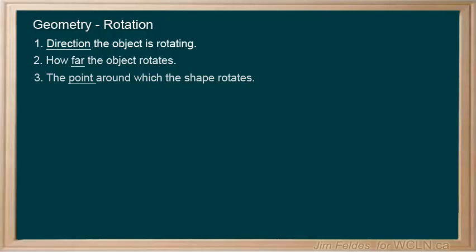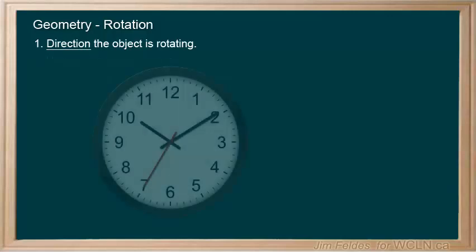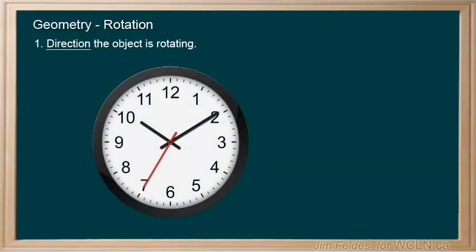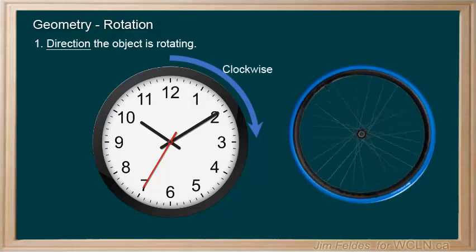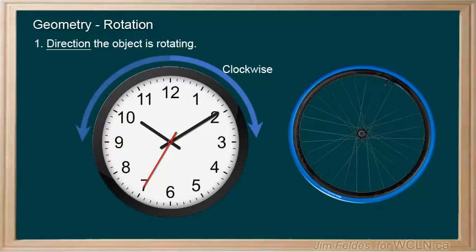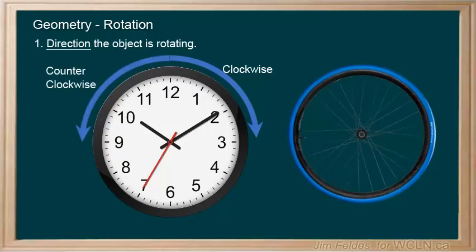When it comes to the direction of a rotating shape we make reference to the traditional clock. From the 12 at the top of the clock the moving hands turn to the right. This is the normal direction of movement so it's referred to as clockwise. Since the movement in the other direction is backwards it is called counterclockwise.